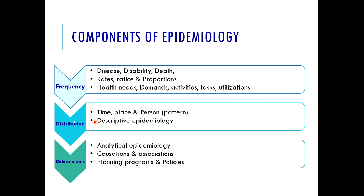Going towards frequency — we calculate rates, ratios, and proportions for disease, disability, and death, and we calculate health needs and how to counteract demands of the population. Time, place, and person distribution is observed in descriptive epidemiology. When we want to find out associations and causations, we are dealing with analytical epidemiology. Descriptive epidemiology only describes — we can generate a hypothesis but cannot prove it. In analytical epidemiology, the hypothesis is rejected or accepted because causations and associations are developed. On the basis of causation and association, we make plans, decisions, and policies.